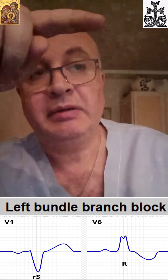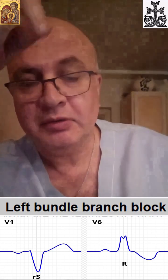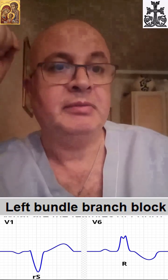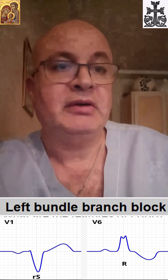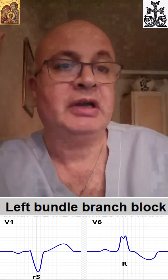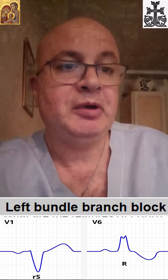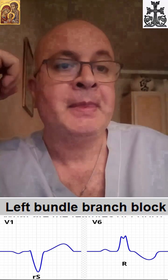If the branch block is complete, we can see a W pattern in V1 — the opposite of M. So the deep S wave in lead V1 option is also correct. LBBB is often associated with heart failure — of course, it's essentially synonymous with heart failure.